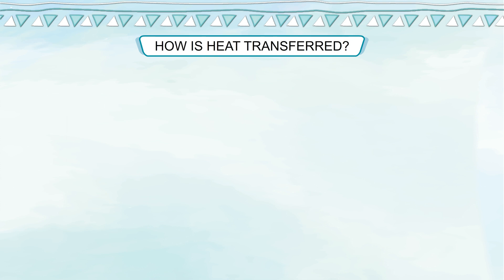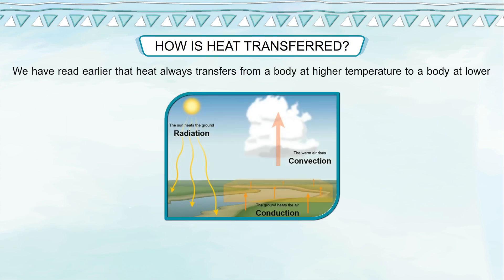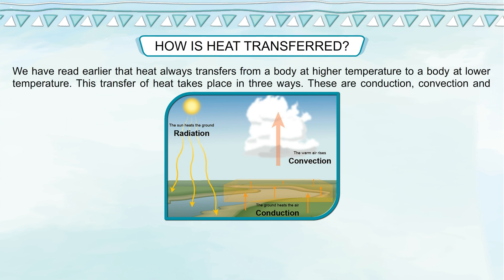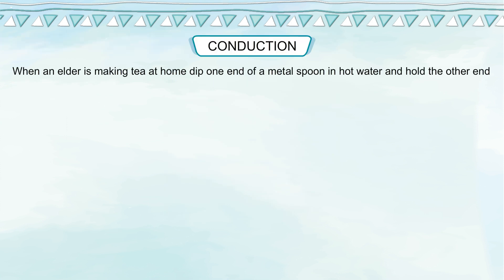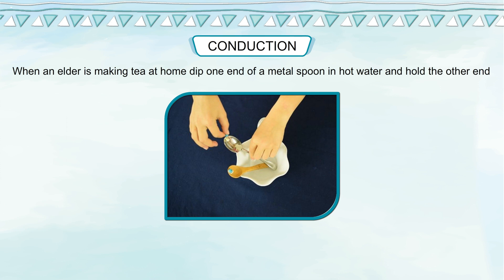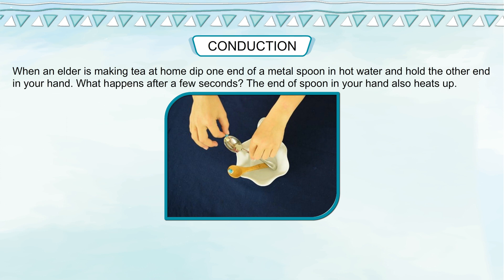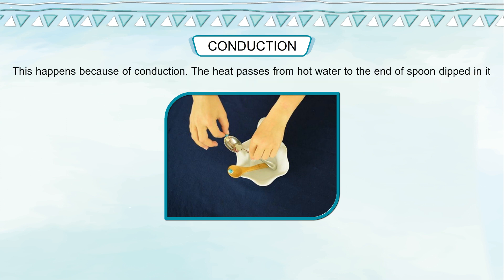How is heat transferred? Heat always transfers from a body at higher temperature to a body at lower temperature. This transfer of heat takes place in three ways: conduction, convection, and radiation. Conduction: When an elder is making tea at home, dip one end of a metal spoon in hot water and hold the other end in your hand — after a few seconds, the end in your hand also heats up. This happens because of conduction. The heat passes from hot water to the end of the spoon dipped in it, and from there to the end in your hand.